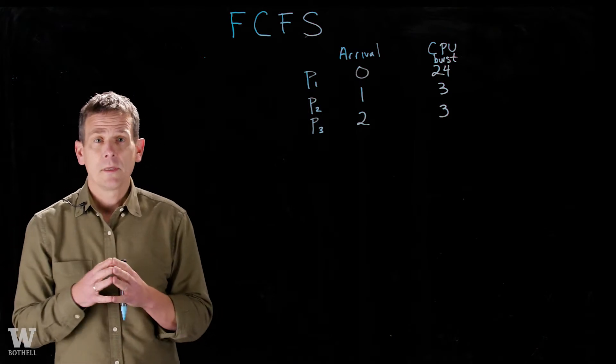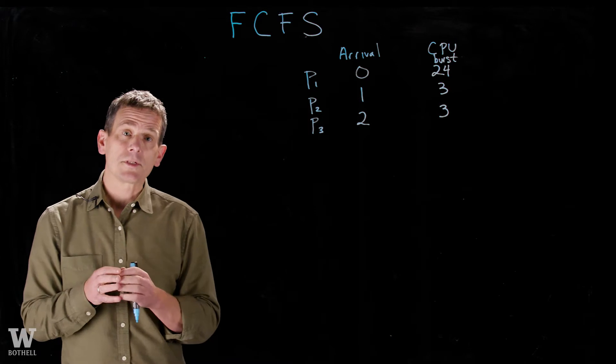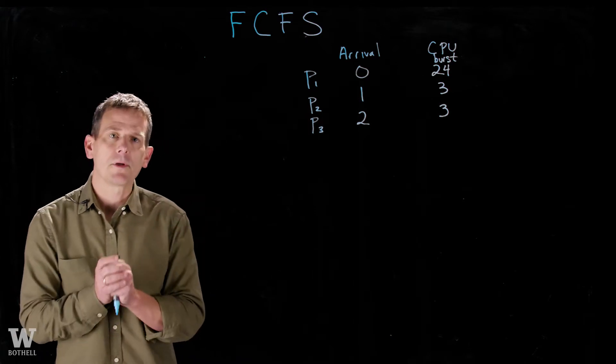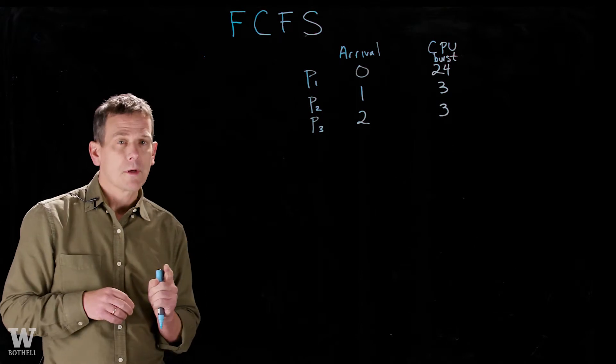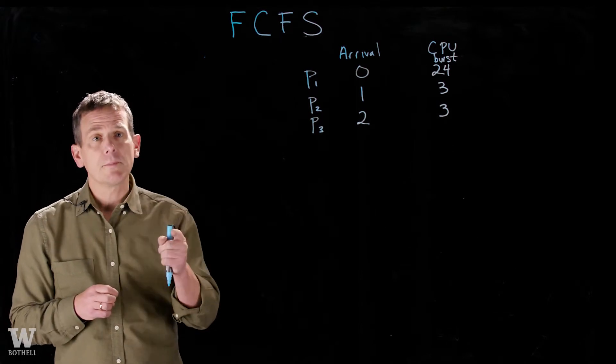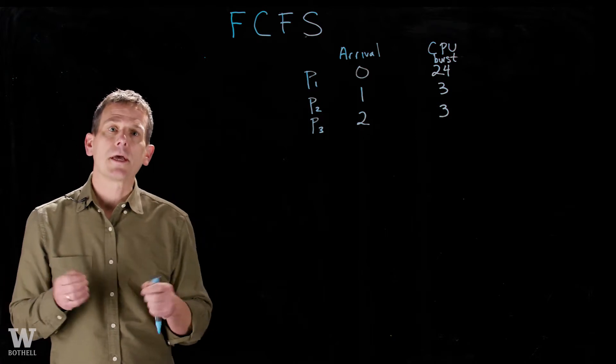The other thing that could happen is a thread could be running along doing CPU, and the scheduler decides this thread's had enough time. I'm going to context switch this thread out. So the quantum will run out. The scheduler will interrupt that thread and decide a new thread to run. This is called the context switch.